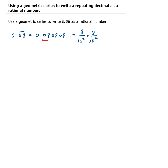So 8 over 10 to the fourth plus 8 over 10 squared will give us 0.08 0.08, and then adding another one, we get 8 over 10 to the sixth. And we can continue from here.